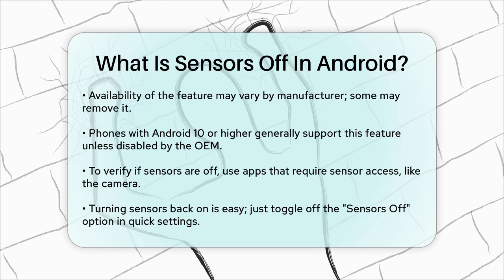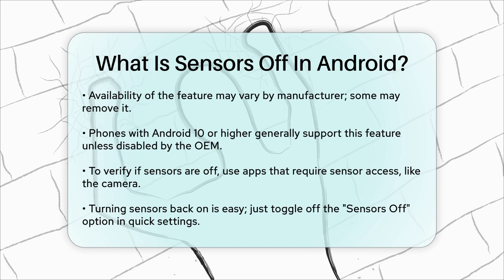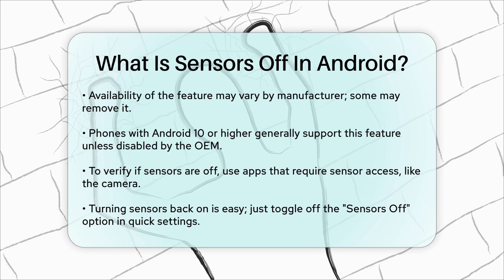So, if you're looking for a way to have more control over your phone's sensors for privacy or testing purposes, the Sensors Off feature in Android is a powerful tool to have at your fingertips.